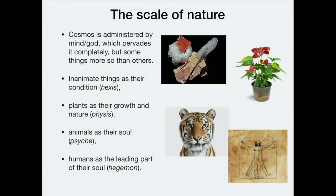This gets back to the question about nature. The cosmos is administered by this mind, God, or reason, and this pervades it completely, but it pervades some things more than others. It pervades inanimate things like crystals, minerals, and metals in the sense that those bodies hold together and have the qualities they do by virtue of what the Stoics call their hexis. Plants exhibit a different order of complexity — they not only have a hexis, but also growth, use of nutrition, and ability to reproduce, giving them what the Stoics call a nature or physis.